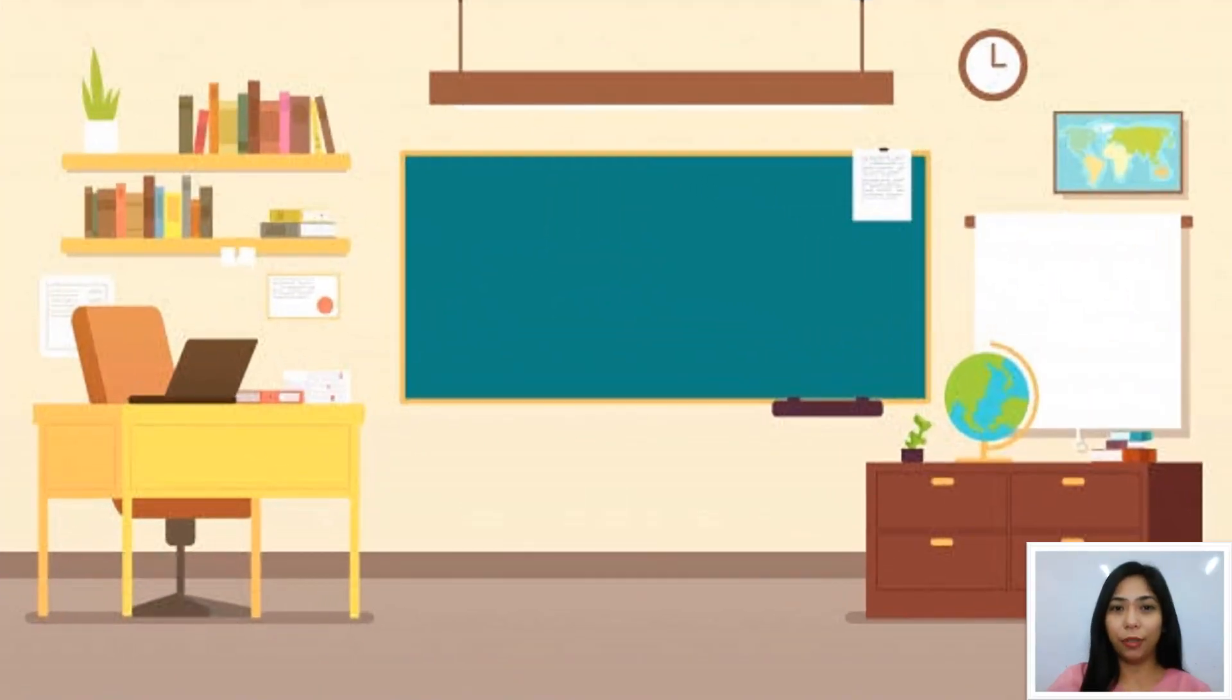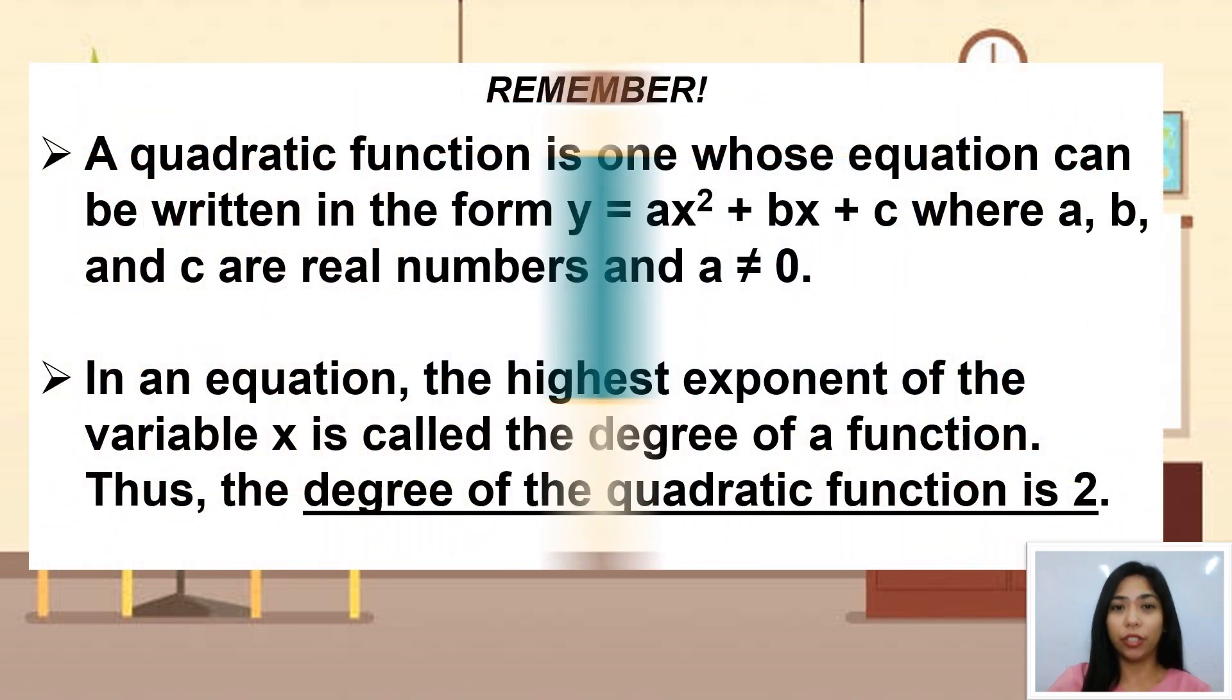Now, do you understand what is a quadratic function? So, remember, a quadratic function is one whose equation can be written in the form Y equals AX squared plus BX plus C where A, B, and C are real numbers and A is not equal to 0. In an equation, the highest exponent of the variable X is called the degree of a function. Thus, the degree of the quadratic function is 2.